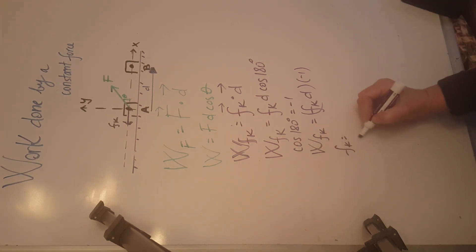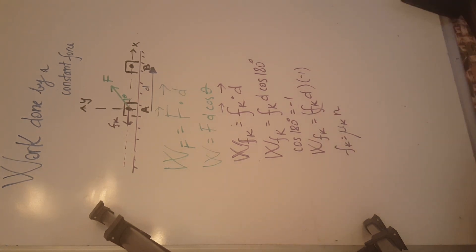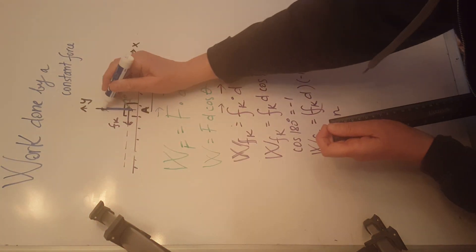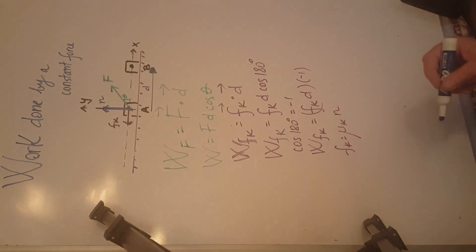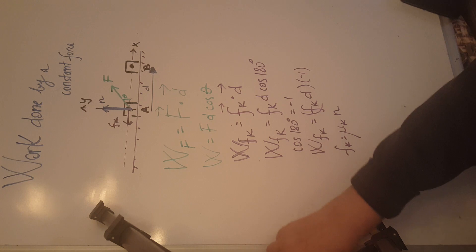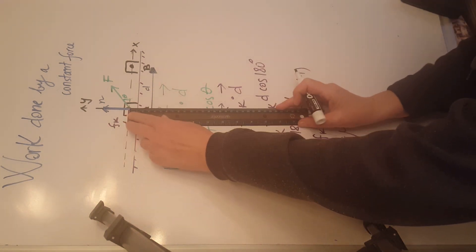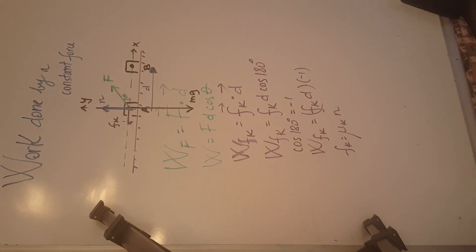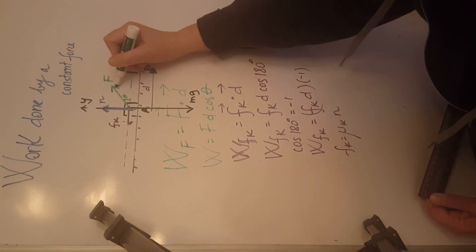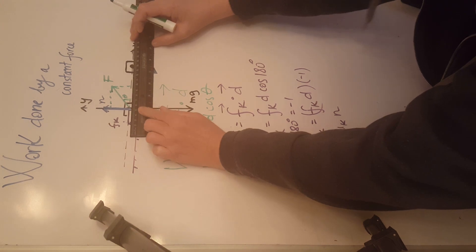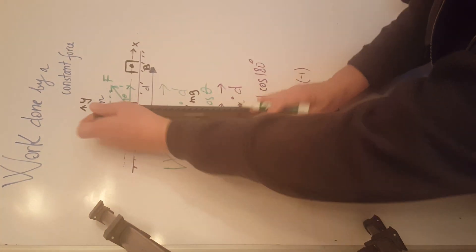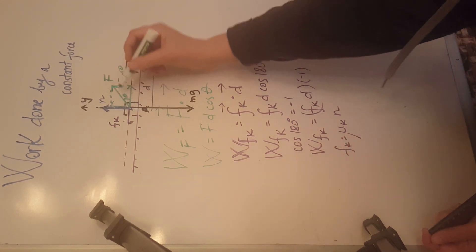The force of friction in magnitude equals the coefficient of friction times the normal force. The normal force is perpendicular to the plane, vertically upwards. We also draw the force of gravity vertically downwards, and resolve force F into its horizontal and vertical components. The horizontal component is F cosine theta and the vertical component is F sine theta.